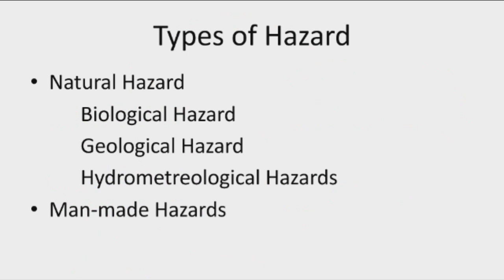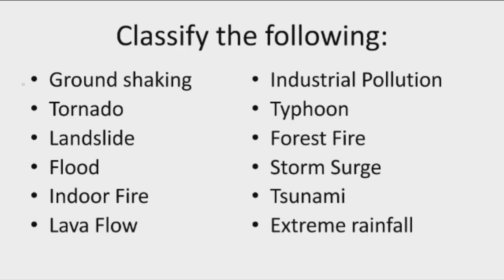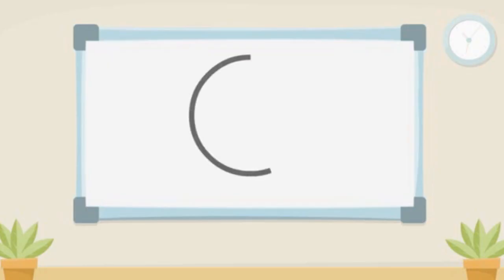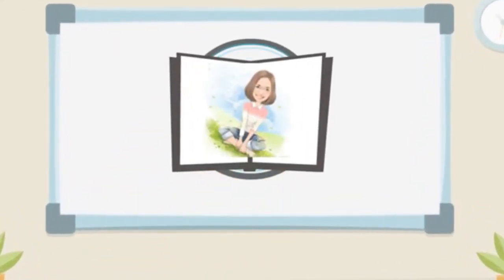Our next lesson is classifying the types of hazards. There are two types: natural hazards and man-made hazards. Under natural hazards we have biological, geological, and others. We have listed hazards for you to classify — the correct answers will be given in our next video. If you have any questions, comment down below, subscribe to our channel, and thank you for watching. This has been Teacher Del — it's a great day, bye!